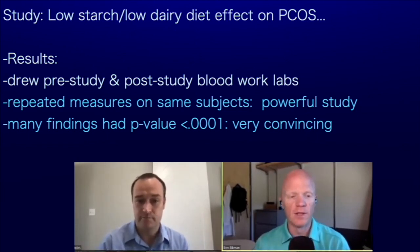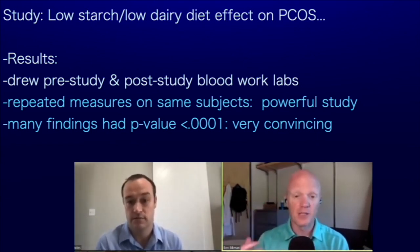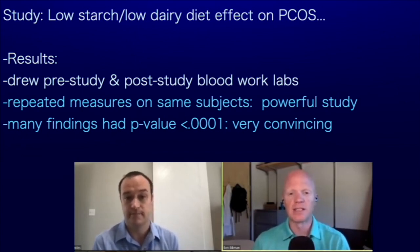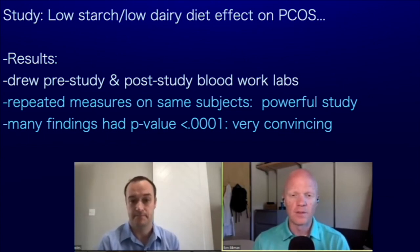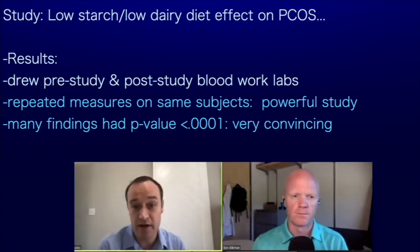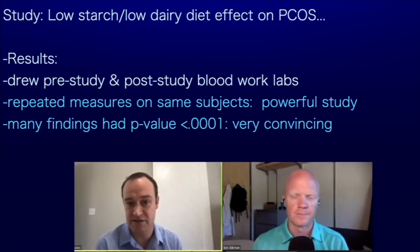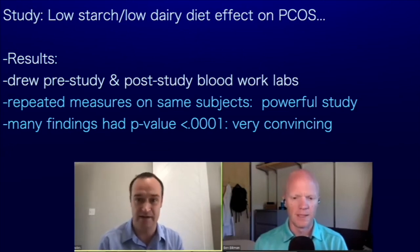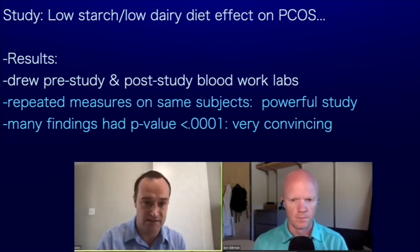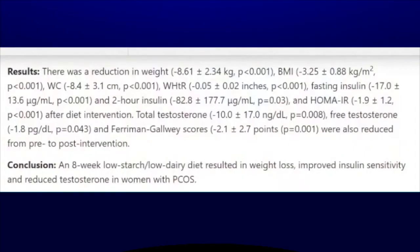It's a repeated measures design — comparing a subject to herself — which gives a lot more statistical power. P values less than 0.0001 are pretty convincing, meaning it's most assuredly not chance that caused these changes. Some key results: a reduction in weight of 8.6 kilograms, fasting insulin down by 17 micrograms per milliliter. The conclusion: an eight-week low-starch, low-dairy diet resulted in weight loss, improved insulin sensitivity, and reduced testosterone in women with PCOS.